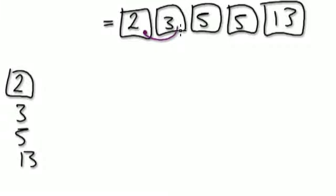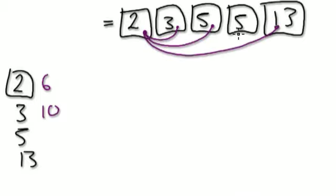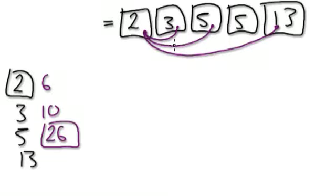Let's combine these now — 2 and 3. So 6 would be a factor. Let's combine 2 and 5 — 10 would be a factor. Let's combine 2 and 13 — it's pointless combining the 5 again because we just did it with this 5. So 2 times 13 is 26, and 26 would be a factor. Now let's start combining 3 and 5 — so 15 is a factor.